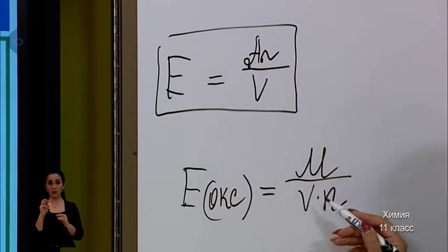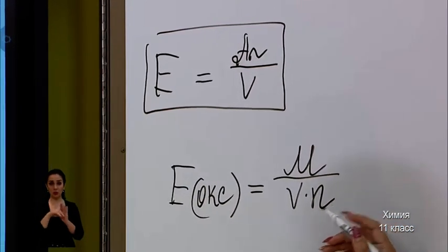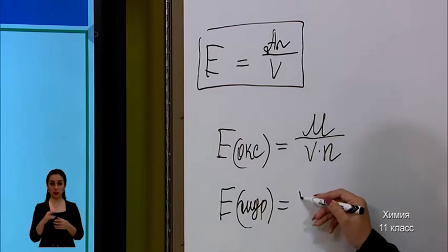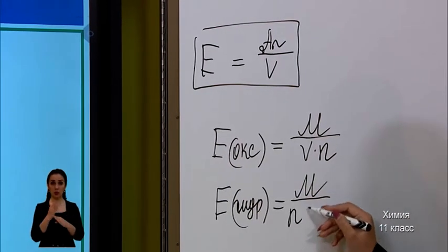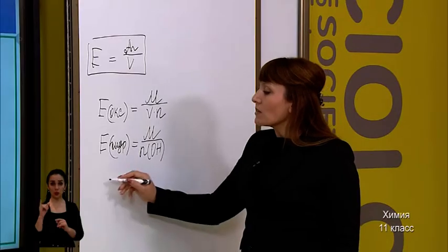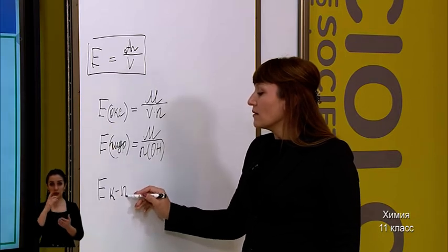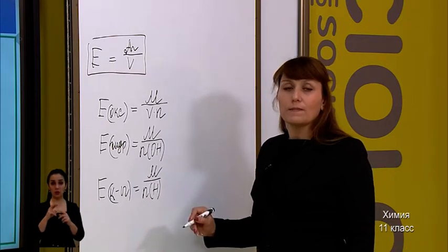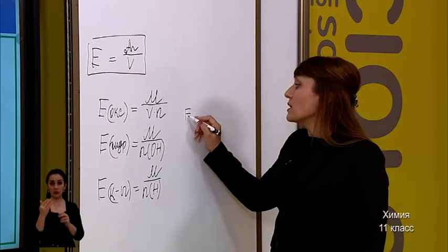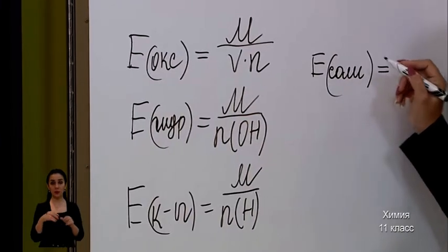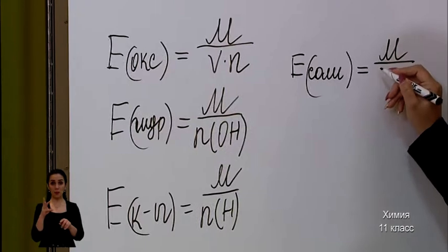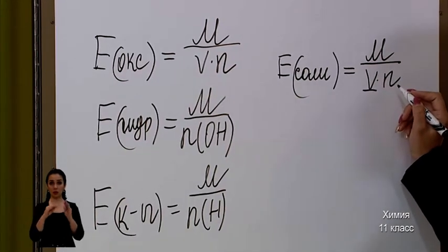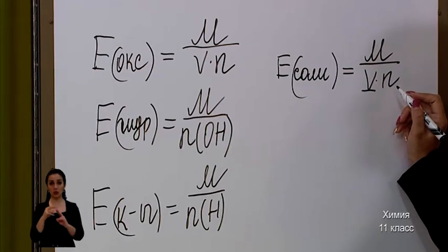Here V is the valence of the element, and N is the number of atoms of the element forming the oxide. To find the equivalent of hydroxides, the formula is: molar mass divided by the number of hydroxyl groups. To find the equivalent of an acid, the formula is: molar mass divided by the number of hydrogen atoms in the acid. To find the equivalent of a salt, the formula is similar to that of oxides: molar mass divided by V×N, where V is the valence of the metal forming the salt, and N is the number of metal atoms in the salt.